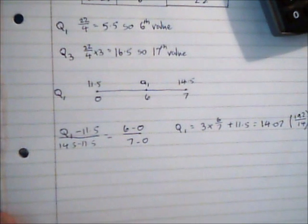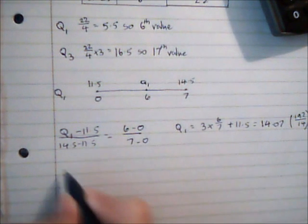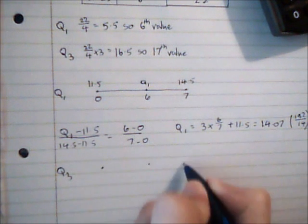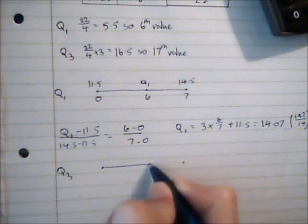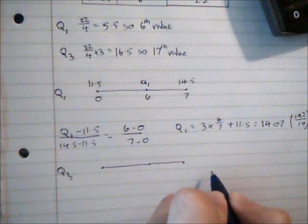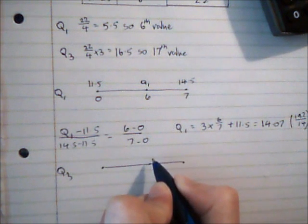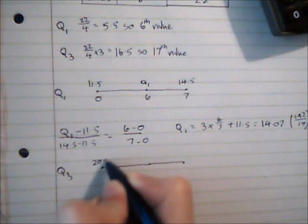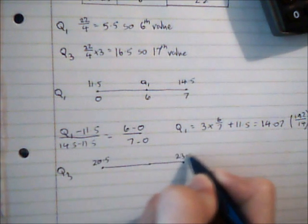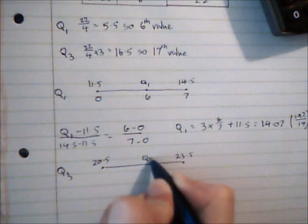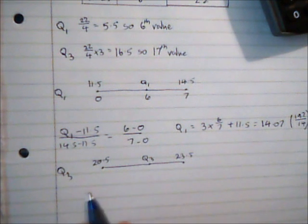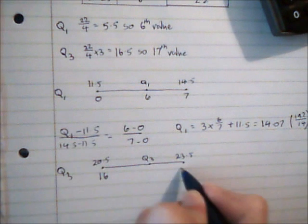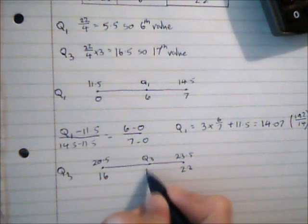So I calculate Q3 in much the same way. So for Q3, now here I'm looking for the 17th value, which is in the final group. So 20.5 to 23.5, Q3 is somewhere through there. And the beginning of that group was 16, the end is 22, this point here is 17. So I can then set up an equation.